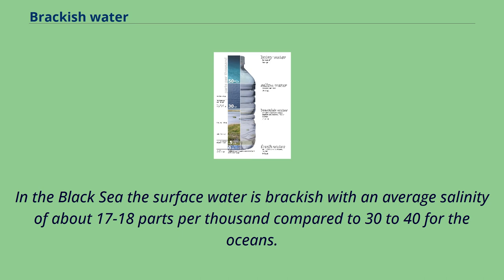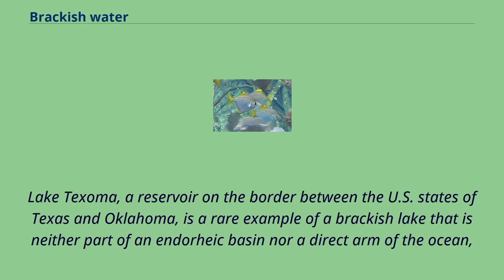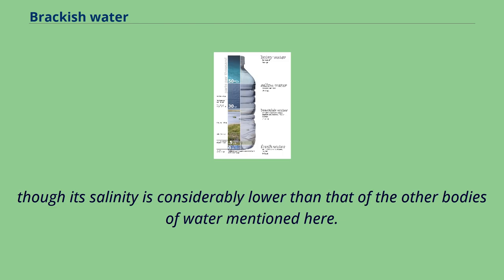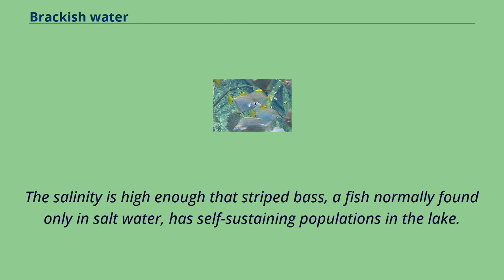In the Black Sea, the surface water is brackish with an average salinity of about 17 to 18 parts per thousand, compared to 30 to 40 for the oceans. The deep, anoxic water of the Black Sea originates from warm, salty water of the Mediterranean. Lake Texoma, a reservoir on the border between the U.S. states of Texas and Oklahoma, is a rare example of a brackish lake that is neither part of an endoreic basin nor a direct arm of the ocean, though its salinity is considerably lower than that of the other bodies of water mentioned here. The reservoir was created by the damming of the Red River of the South, which receives large amounts of salt from natural seepage from buried deposits in the upstream region. The salinity is high enough that striped bass, a fish normally found only in salt water, has self-sustaining populations in the lake.